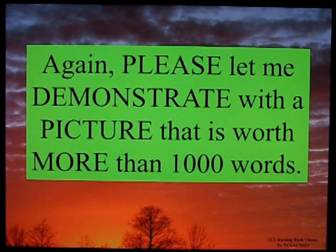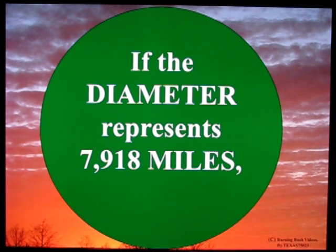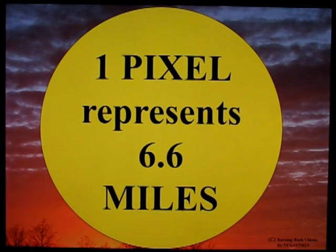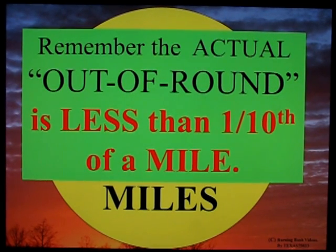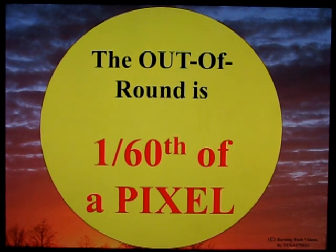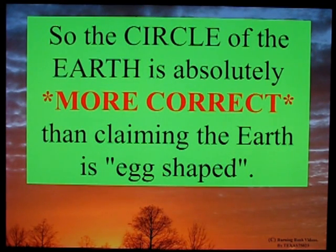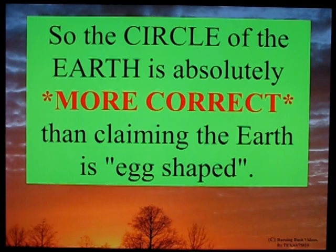Please let me demonstrate with a picture that is worth more than a thousand words. This circle is 1,200 pixels tall and wide. If the diameter represents 7,918 miles — roughly the diameter of the earth — one pixel represents 6.6 miles. Remember, the actual out-of-round of the earth is less than one-tenth of a mile. The out-of-round of the earth is one-sixtieth of a pixel. Please open your eyes, sister, and see the circle of the earth. So the circle of the earth is absolutely more correct than claiming the earth is egg-shaped.